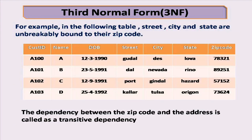In the following table, street, city, and state are unbreakably bound to their zip code. This is an example of transitive dependency.